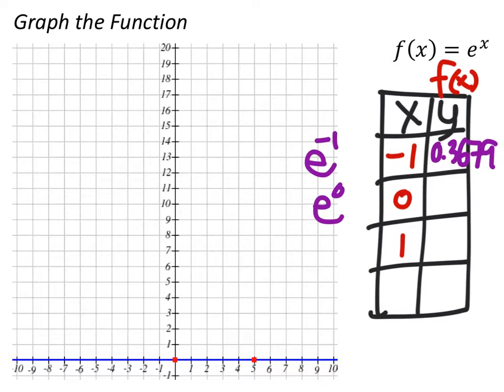The next value, e to the power of 0, this is actually the only easy value we're going to be able to find because anything to the power of 0 is 1.